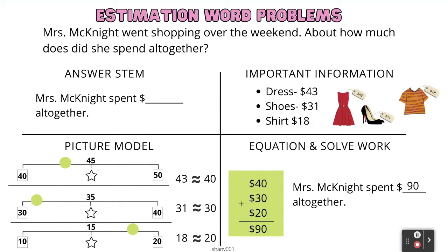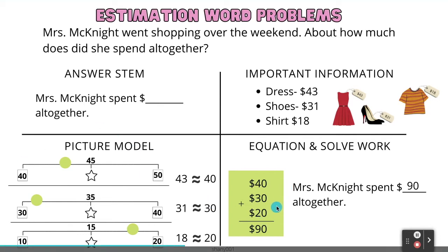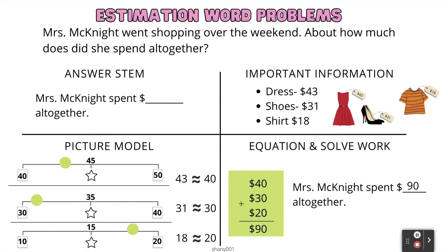To round these numbers, I will be using an open number line. The first number is 43. On the number line, we know there's 40 and 50. The star represents the midpoint, which is 45. 43 lies closer to 40, so 43 rounds to 40. 31 rounds to 30. And 18 rounds to 20. Now let's add up all of these numbers: 40 plus 30 plus 20 equals 90. Our answer is: Mrs. McKnight spent $90 all together.